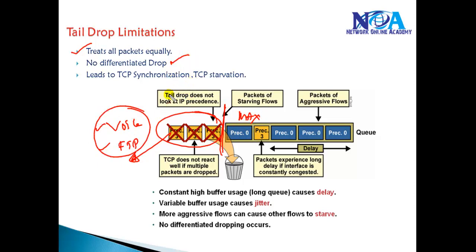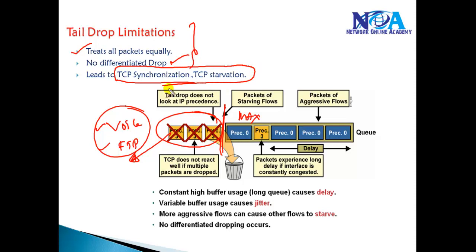The major drawback with tail drop is that it increases bandwidth utilization. It also introduces TCP-related issues, specifically TCP starvation and TCP synchronization.